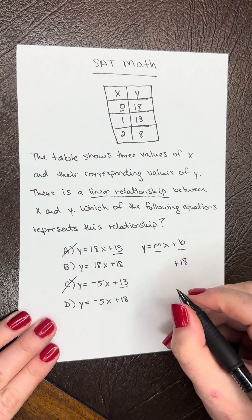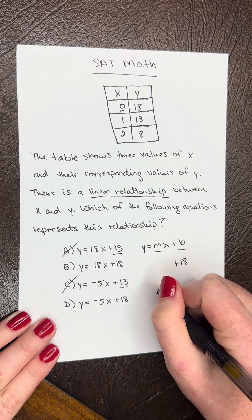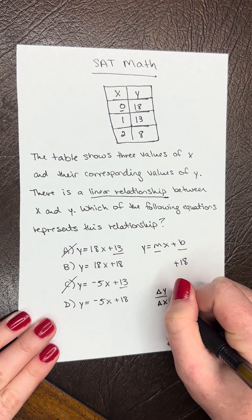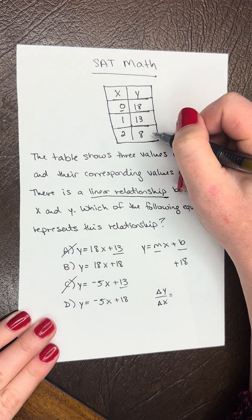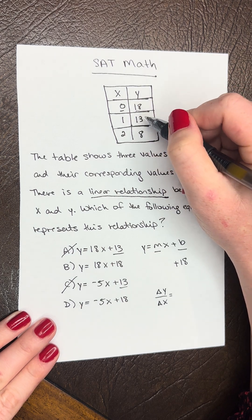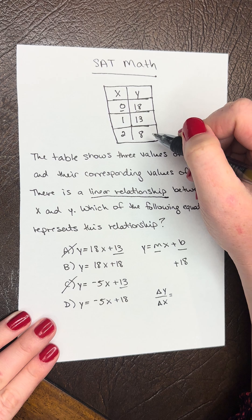Then we need our slope. So we need to think about our change in y over change in x. So let's use two of our points here. So let's use 1, 13 and 2, 8.